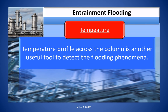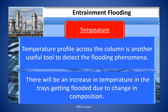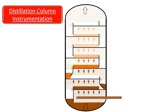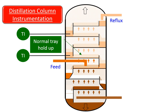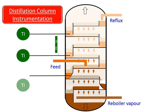Monitoring tray temperature. Temperature profile across the column is another useful tool to detect the flooding phenomenon. There will be increasing temperature in the trays getting flooded due to changes in composition. This figure shows the temperature measuring instruments installed on the trays; the increase in temperature can be monitored as a trend in the flooded zone.